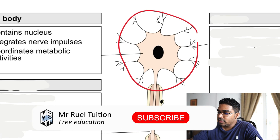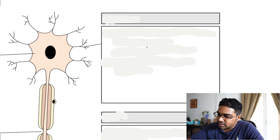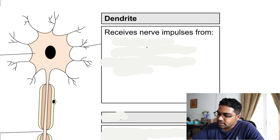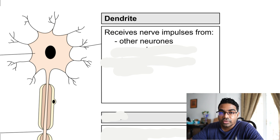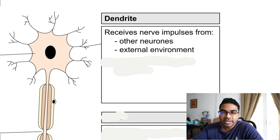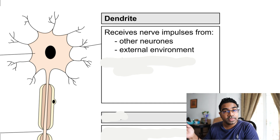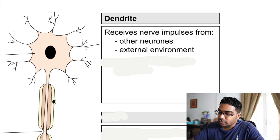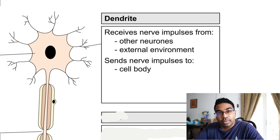Coming out of the cell body, you can see these tiny processes. These processes are known as the dendrites. Dendrites are responsible for receiving nerve impulses from either other neurons or the external environment — this will depend on the type of neuron, which we will discuss later.